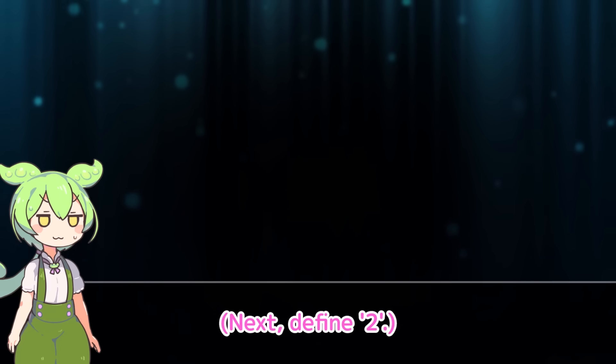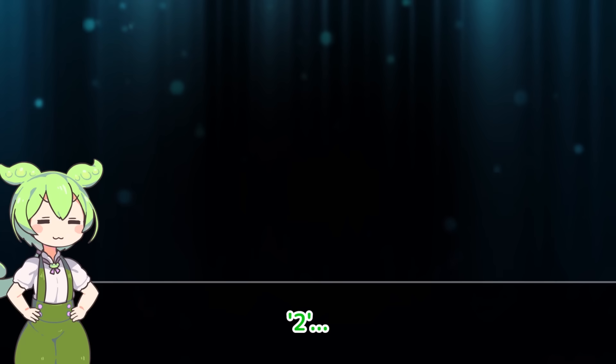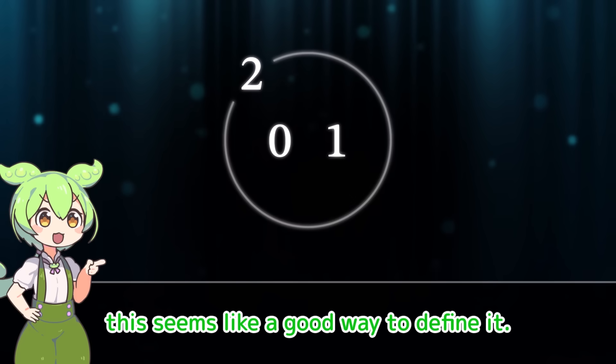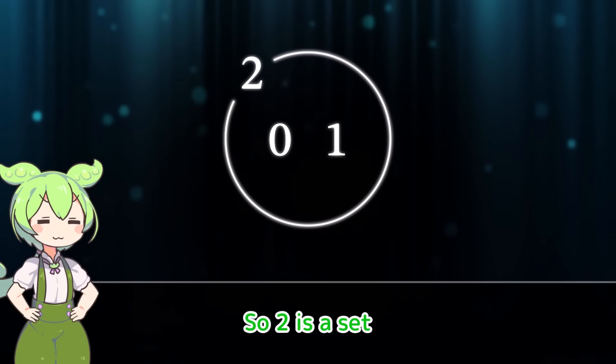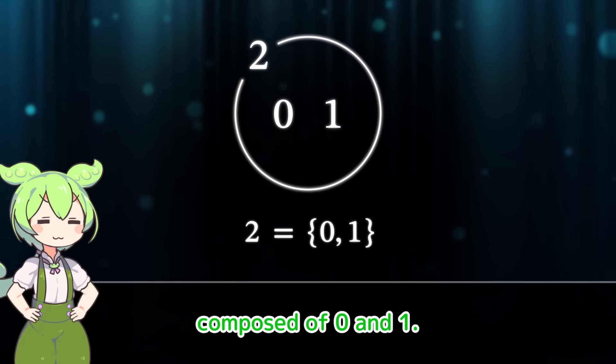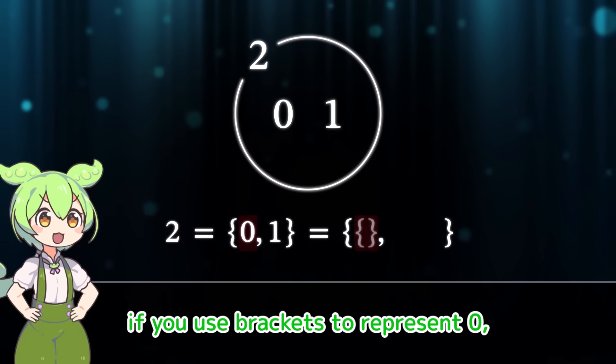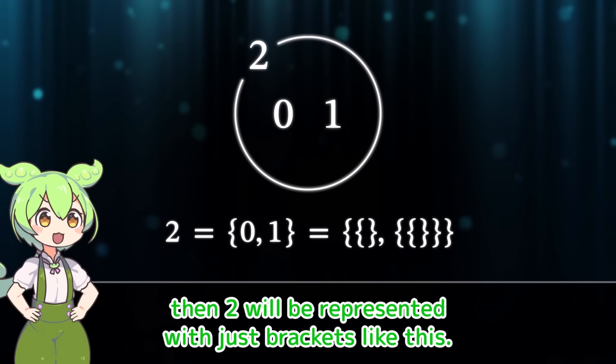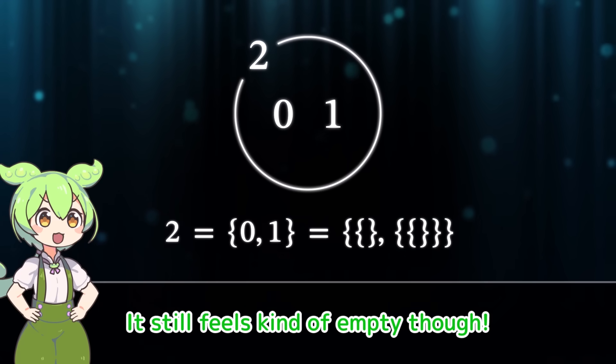Next, define two. Two. That word sounds familiar. I define zero and one. Then, for two, this seems like a good way to define it. So, two is a set composed of zero and one. If I use brackets to represent zero, and use brackets for one, then two will be represented with just brackets, like this. It still feels kind of empty, though.